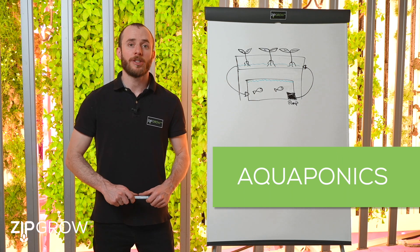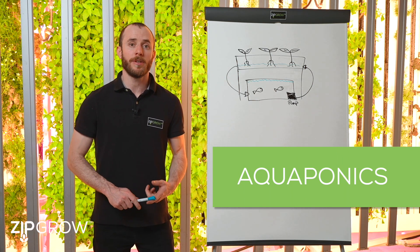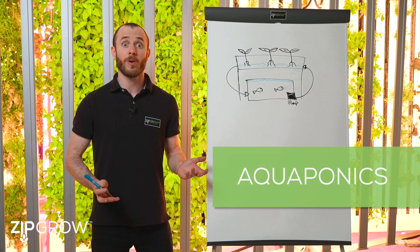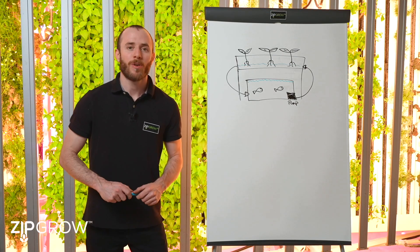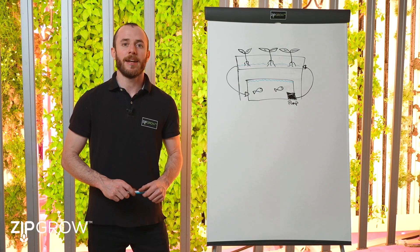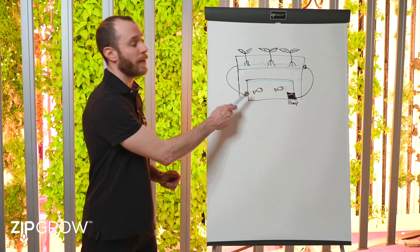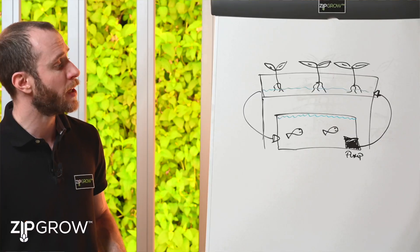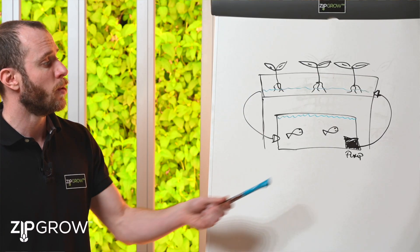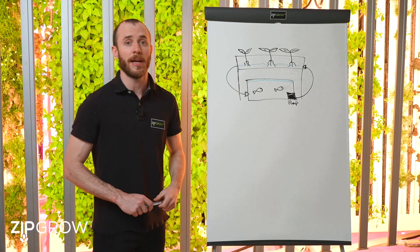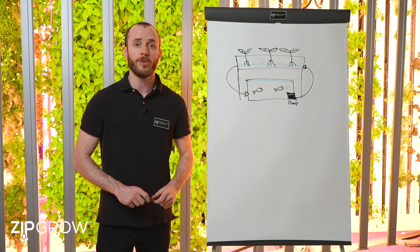A more unique method of hydroponics involves combining either DWC or flood and drain with something organic. Fish! With aquaponics, you're growing both plants and fish at the same time, with their organic matter being used as fertilizer. Typically, they're grown in separate containers with a nutrient rich solution being pumped to the plants. This allows you to forgo nutrients altogether.